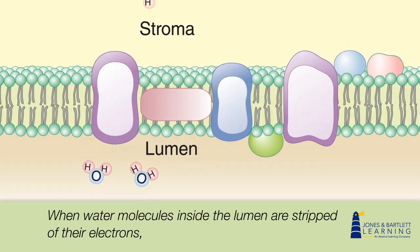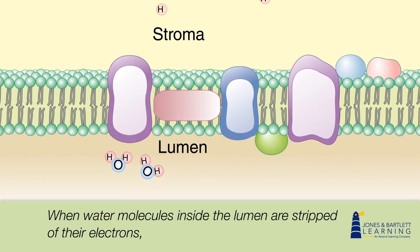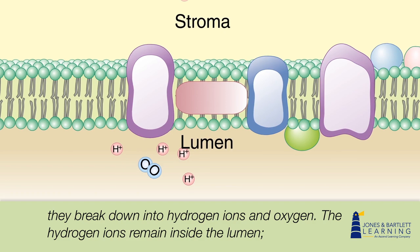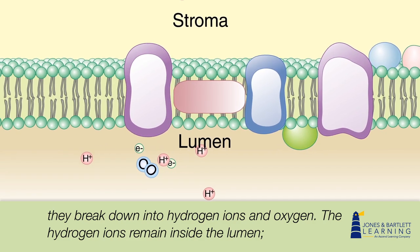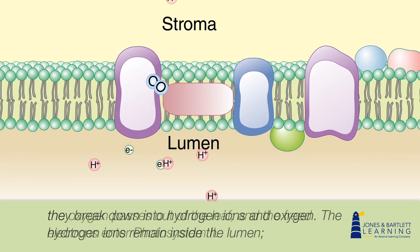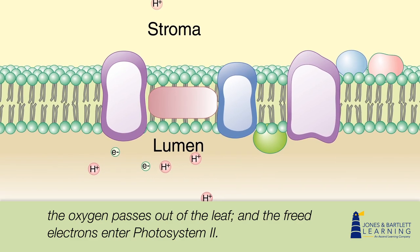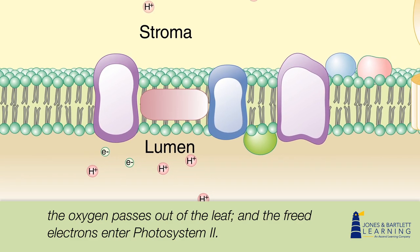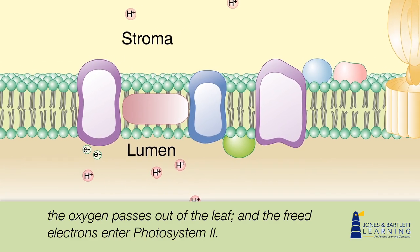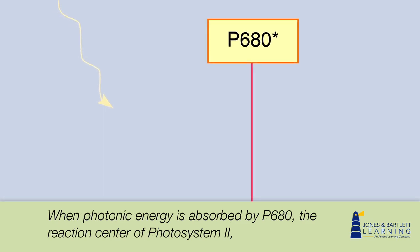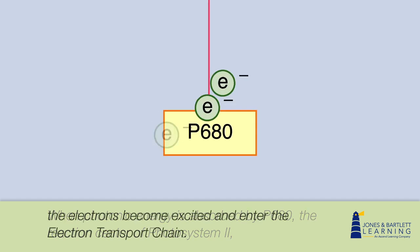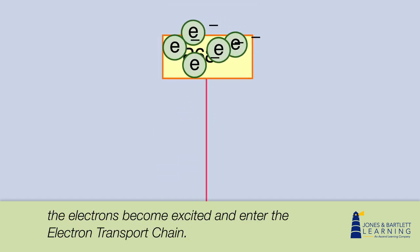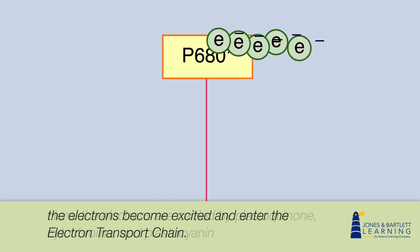When water molecules inside the lumen are stripped of their electrons, they break down into hydrogen ions and oxygen. The hydrogen ions remain inside the lumen, the oxygen passes out of the leaf, and the freed electrons enter photosystem 2. When photonic energy is absorbed by P680, the reaction center of photosystem 2, the electrons become excited and enter the electron transport chain.